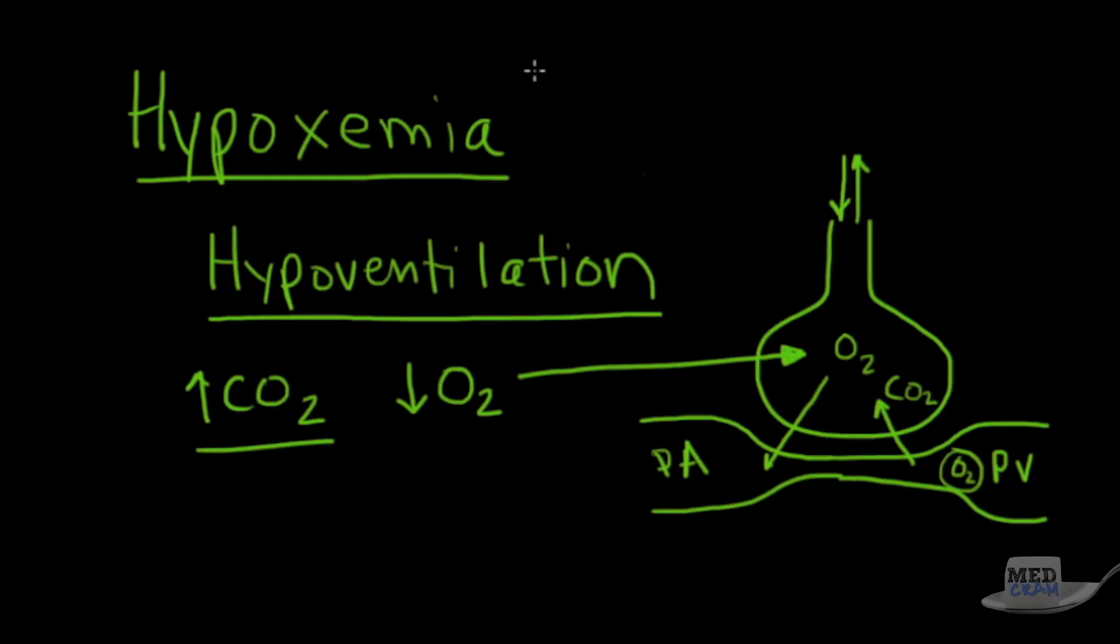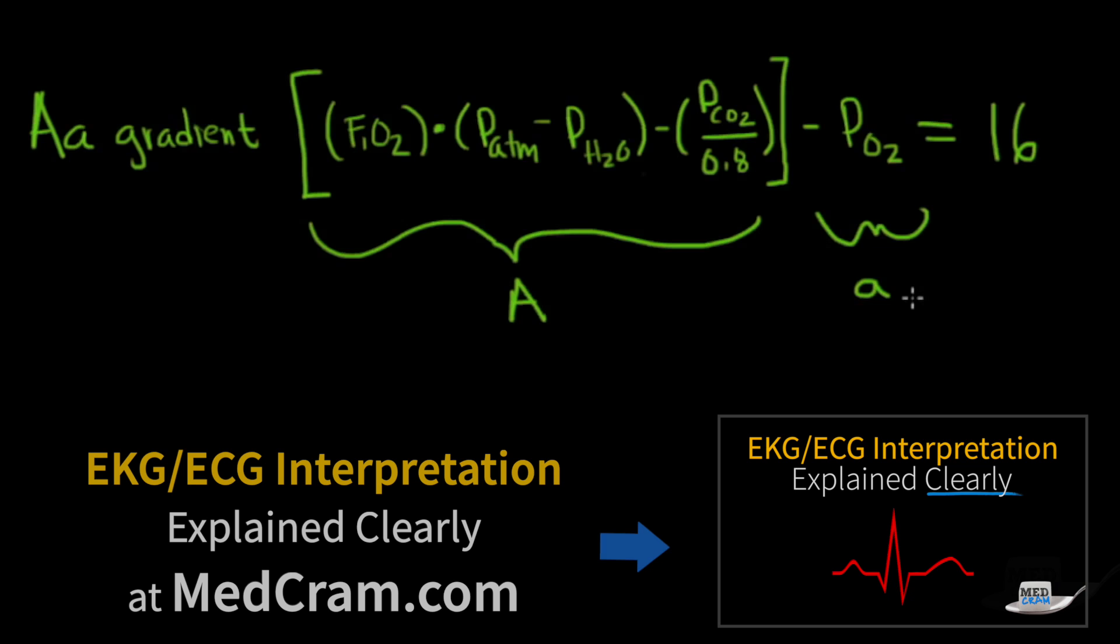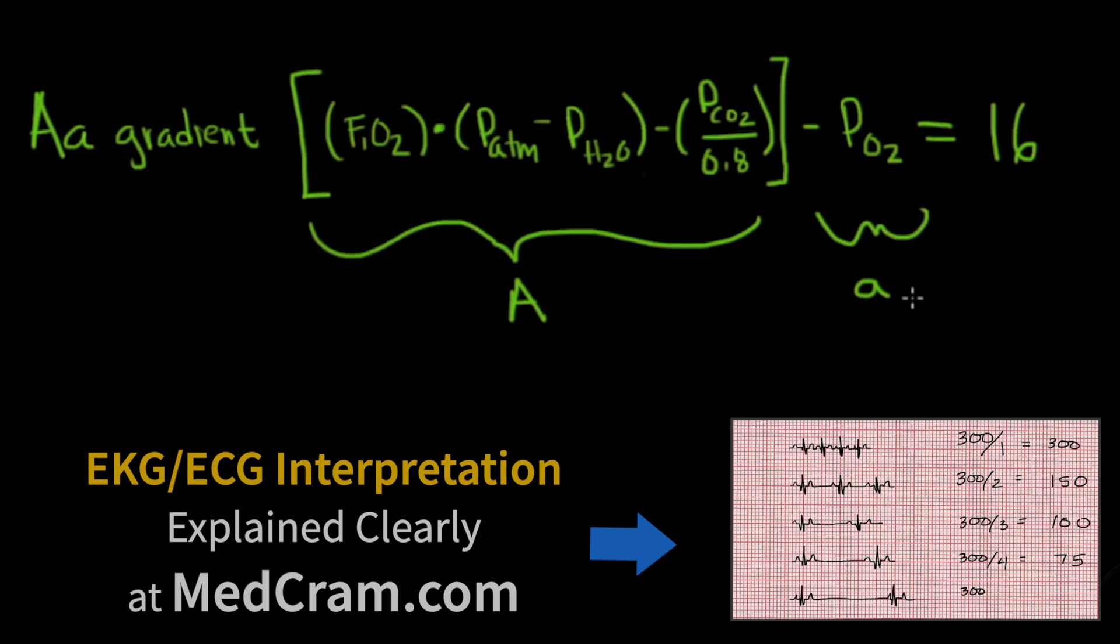Now remember there was an A-a gradient equation. Let's go over what that A-a gradient equation was again. This is the A-a gradient equation, and normally it equals about 16 or 20, or somewhere in the low numbers. This factor right here dictates what the alveolar concentration of oxygen is. And of course this you can get from a blood gas—it's simply the arteriolar or the pulmonary artery, pulmonary vein concentration of oxygen or partial pressure of oxygen.